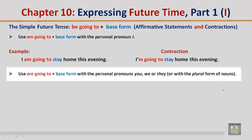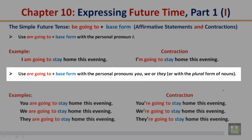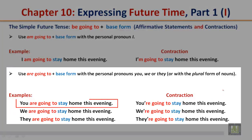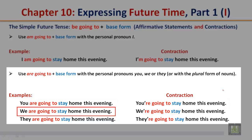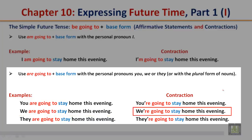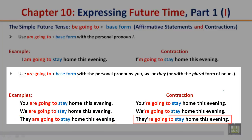Use are going to plus the base form with the personal pronouns you, we, or they, or with the plural form of nouns. Examples: You are going to stay home this evening. Contraction: You're going to stay home this evening. We are going to stay home this evening. Contraction: We're going to stay home this evening. They are going to stay home this evening. Contraction: They're going to stay home this evening.